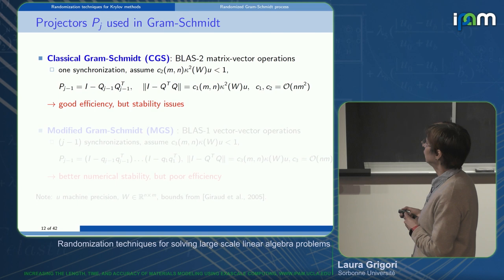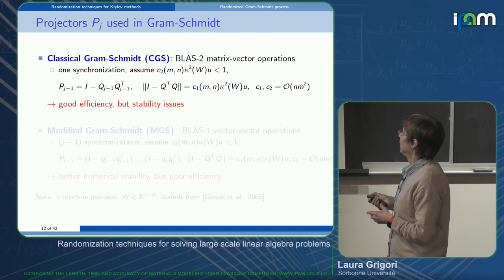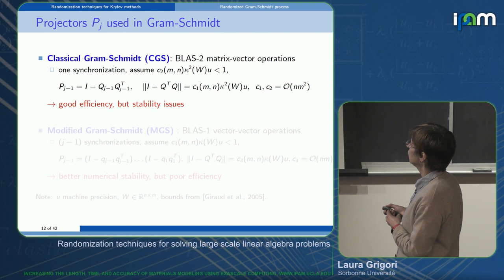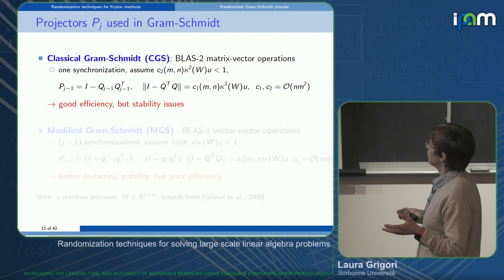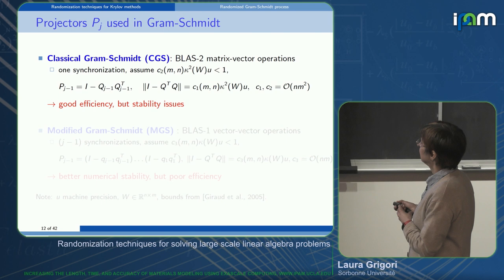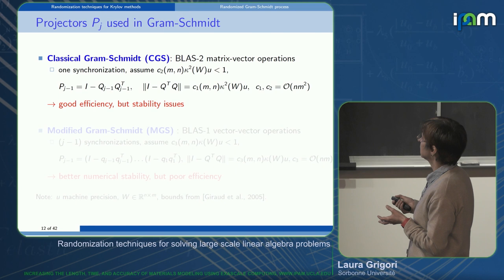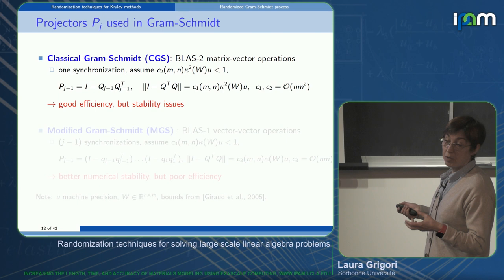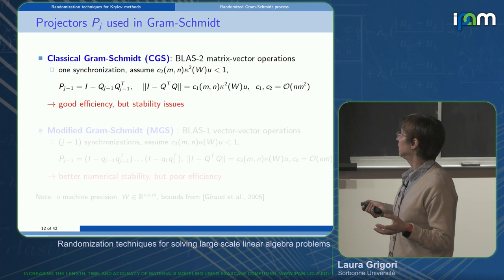Gram-Schmidt proceeds by applying a projector onto the subspace orthogonal to the previously computed vectors. Classical Gram-Schmidt (CGS) uses the projector P = I - Q_{j-1} Q_{j-1}^T, requiring only one synchronization and using level-2 matrix-vector operations — but the loss of orthogonality depends quadratically on the condition number of W. So it has stability issues when W is not well conditioned.